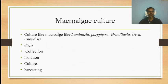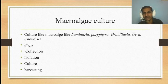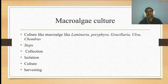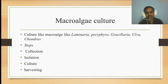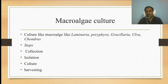In the macro-algae culture process, algae such as Laminaria, Porphyra, and Gracilaria alba are cultivated. When you want to cultivate these macro-algae, it involves four processes: first, collection of the particular algae; after collection, isolation of its components; after isolation, culturing these components; and finally, harvesting the particular algae.